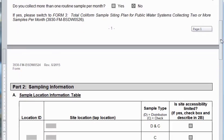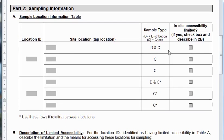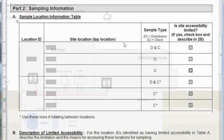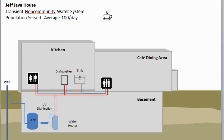Let's look at page two of the form. Part two on page two asks for sampling information. It starts with a table for sample locations, so we have to think about where we are going to sample for coliforms. Let's look at the plumbing diagram for the Java House. Sampling must be representative. With such a small system, just about every sampling area is representative. The kitchen sink represents the location used most for making drinks and food items served at the cafe, and it makes sense to continue with this as the routine sampling location under the revised rule.